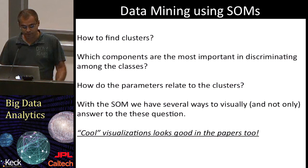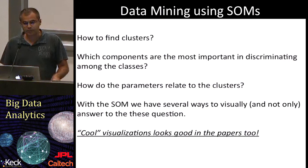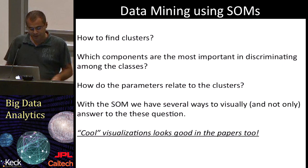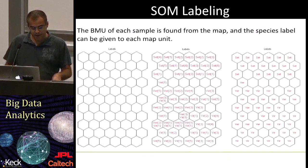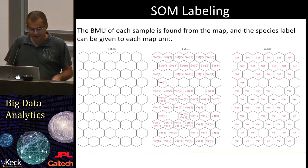Now let's see what data mining questions we can ask while using self-organizing maps. The most important are: how to find clusters, which components are the most discriminating, and how the parameters relate to the clusters. With SOMs we also have several ways to visually answer these questions. First, let's talk briefly about labeling. If we know the class value for some subset of data, we can use it as a gold standard and assign each cell to the class most represented.